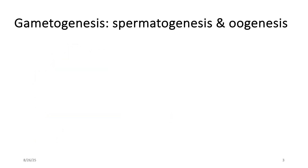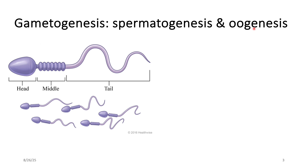So, gametogenesis — gametes and genesis. Genesis, as you know from the Bible, means the beginning, the formation, or the creation. Genesis is like the source — where something is derived from. So you want to see the source of the gametes. The gametes are found within the gonads. The male process is known as spermatogenesis. The sperm, or spermatozoa, becomes the gamete. Oogenesis describes the formation of oocytes for the female.